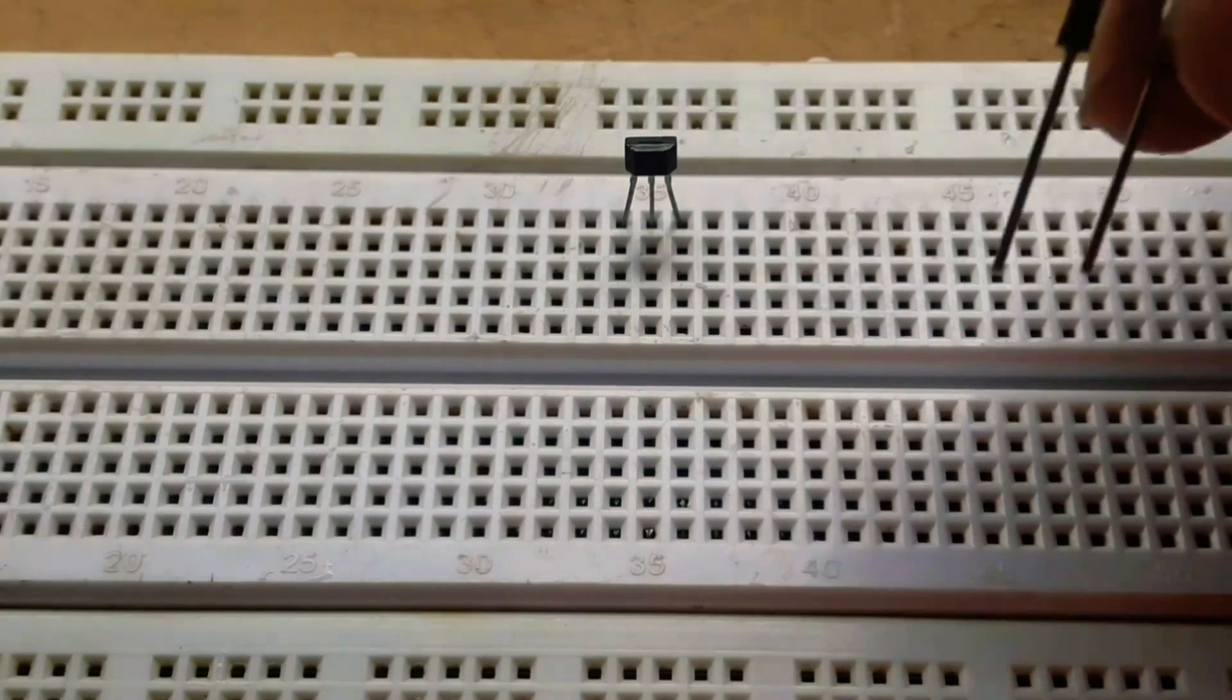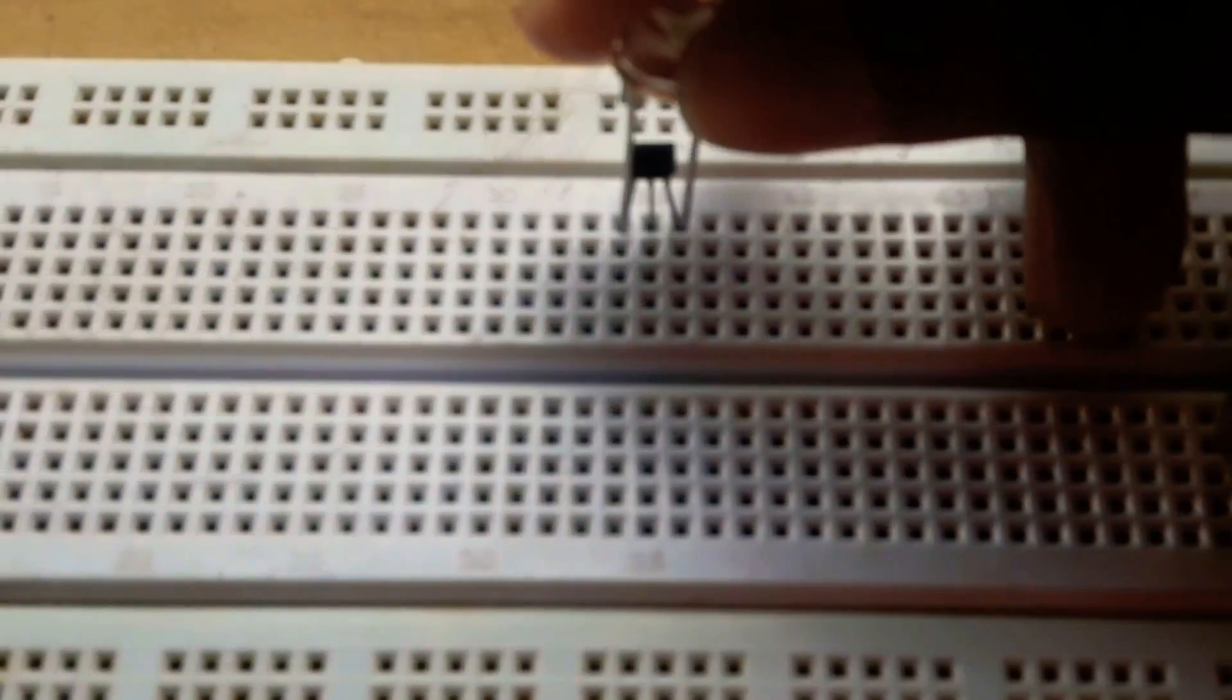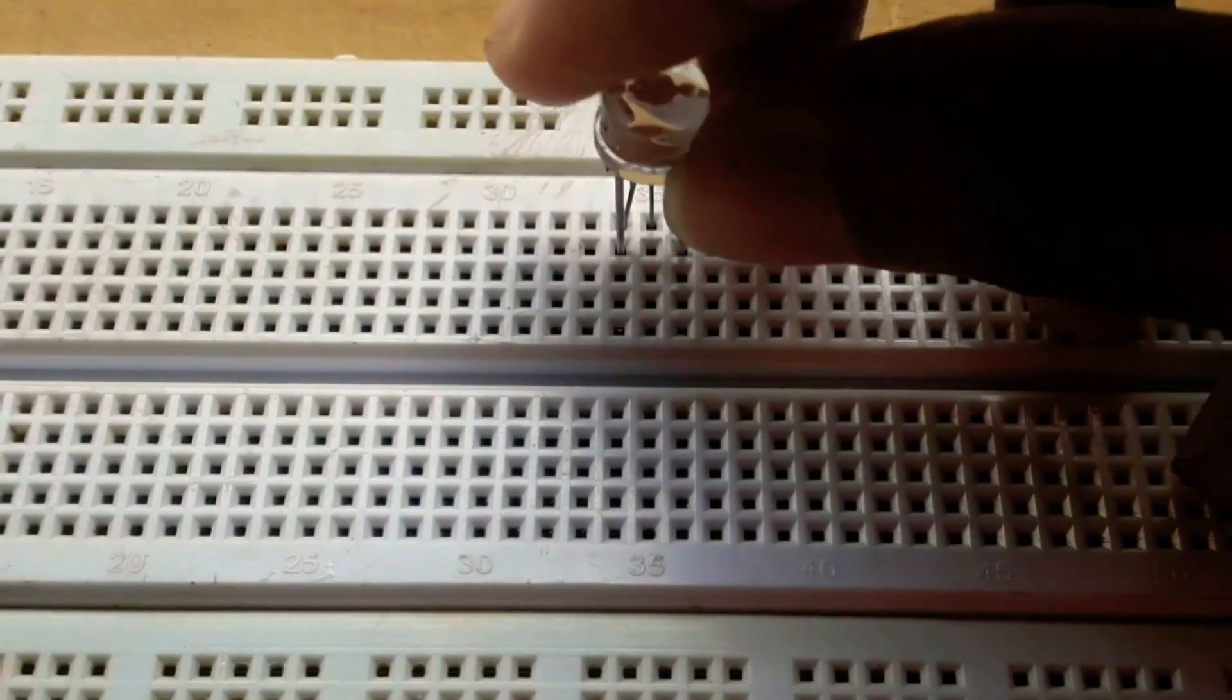After that, connect the anode of the LED to the first pin and the cathode of the LED to the third pin of the Hall Effect Magnet Sensor.